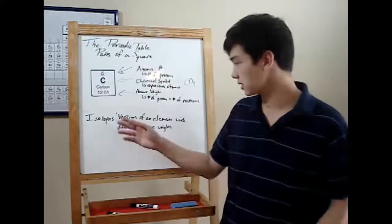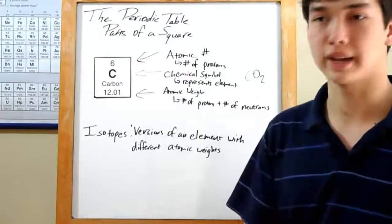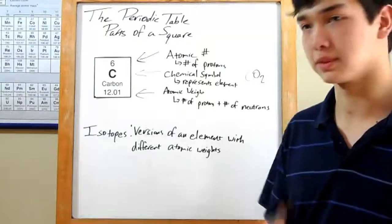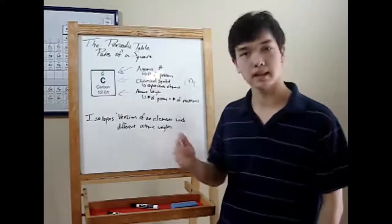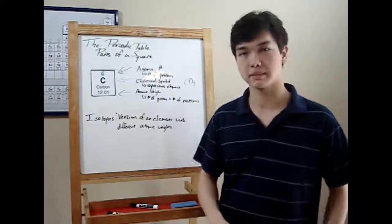There exist these things called isotopes, versions of an element with different atomic weights. That's because they have different numbers of neutrons. See, an element can have more or less neutrons, but still have the same chemical properties.